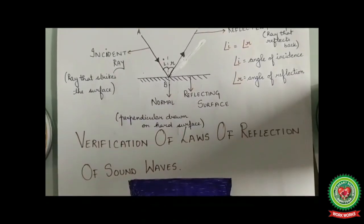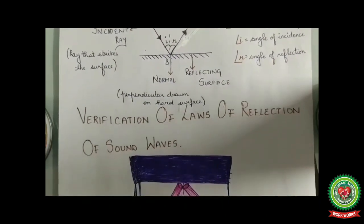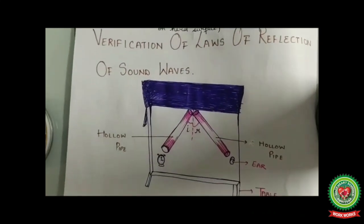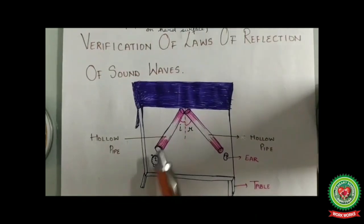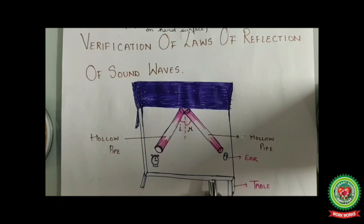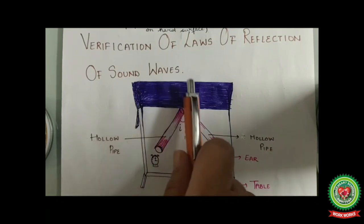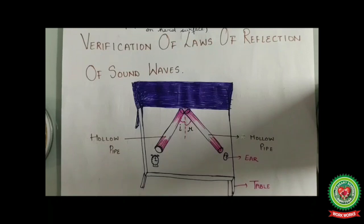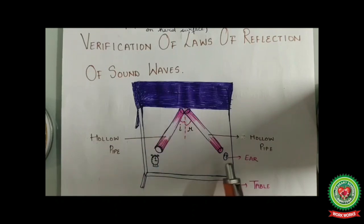Our next topic is verification of the laws of reflection of sound waves. For this we will perform an activity. Take two hollow cylindrical shaped objects which are open at both ends and place them on a table near the wall. Make sure the table is covered with white cardboard paper before placing the pipes on it. Now place a running clock at the open end of one pipe facing you.